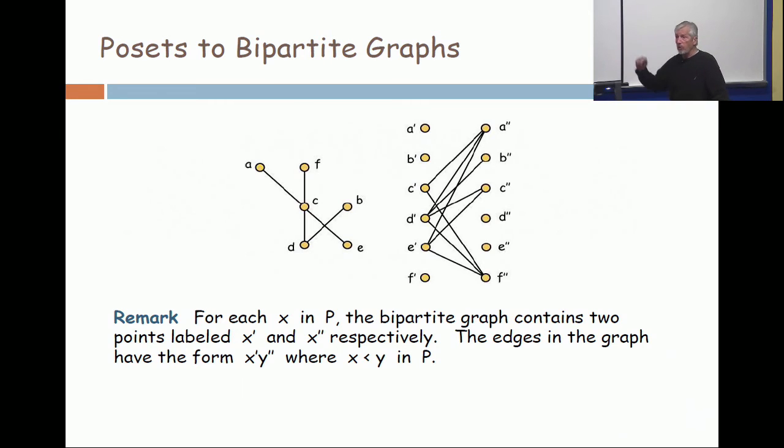Or I could give you the graph, or even just describe, and then say, here's the picture of the poset. And then I would ask, is b prime, f double prime, an edge in the bipartite graph, yes or no?